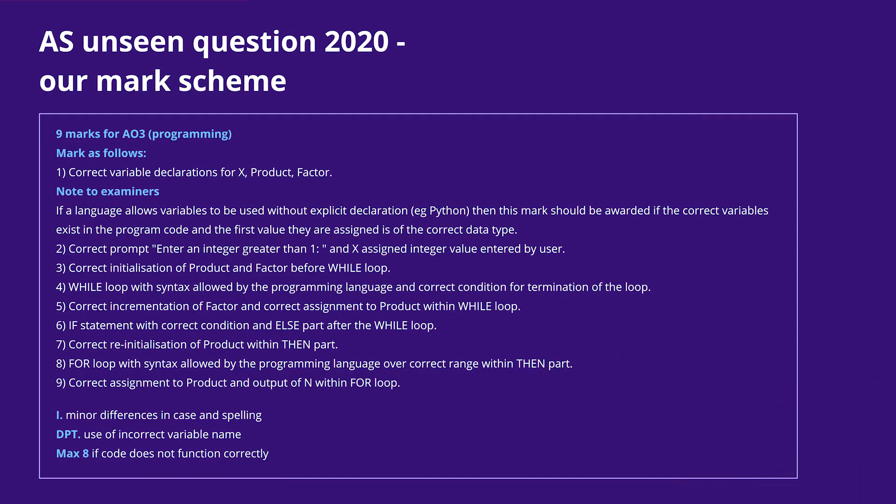This is our mark scheme for the question. As the question requires the student to convert the pseudocode into program code, the mark points are focused on the student using specific programming techniques which correspond to those used in the pseudocode. This kind of mark scheme is relatively easy to write and apply, as it's not possible for a student to produce an unusual solution to the problem. There are no design marks available, as the student has not had to do any design — that was already done when the pseudocode was written. As there is no need to declare variables in Python, the first mark point for data types is awarded in Python if appropriate values are initially assigned to the variables.